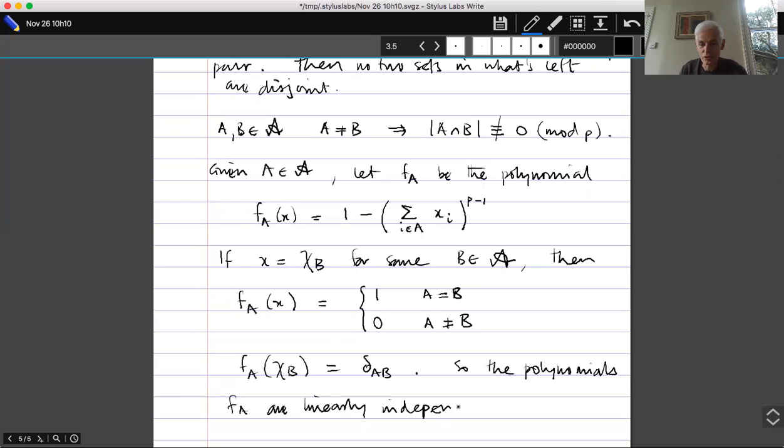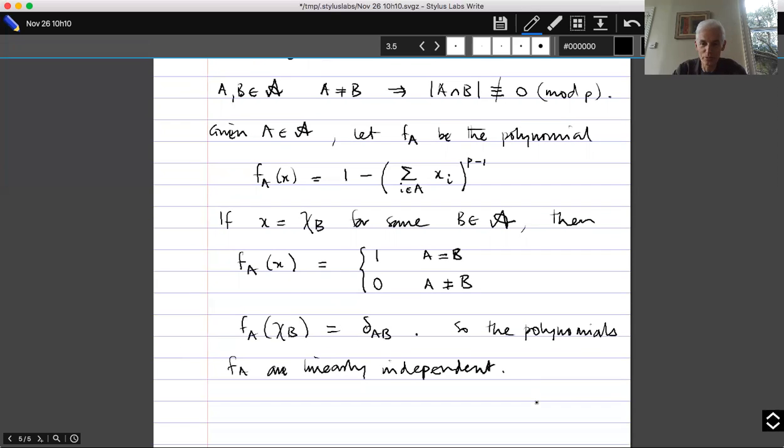Now it looks pretty much as though it's game over, but it's not quite game over because the next stage of the linear algebra argument is to show that they live in a low-dimensional space. And what can we do here? We can say well these are polynomials in n variables of degree at most p minus one. If you start to think about how many such polynomials there are, you rapidly find that the estimate that you can get is bigger than 2 to the n, and so it seems as though in the end you've proved absolutely nothing by this rather nice proof.